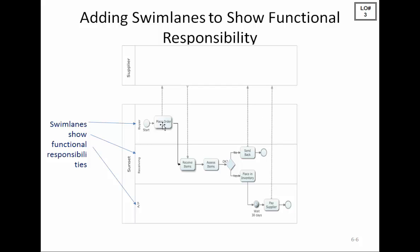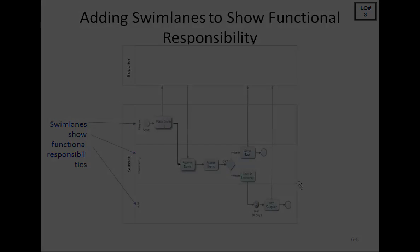Sunset starts by placing the order to the supplier. They receive the items from the supplier and assess them — if they are not okay, they send them back to the supplier and the process ends. If they are okay, they place them in inventory, wait 30 days, and the accounts payable clerk pays the supplier. That's the end of the process.